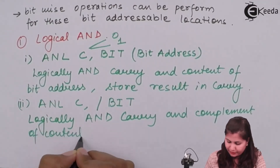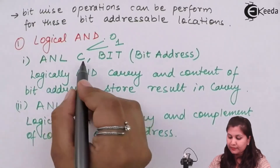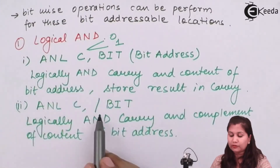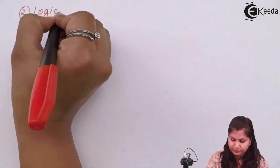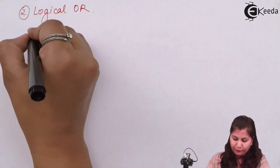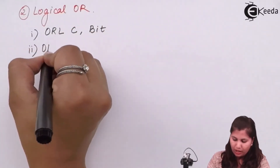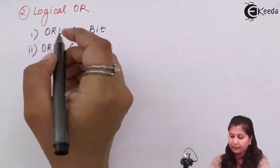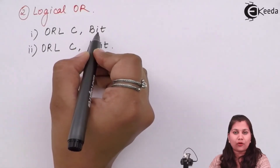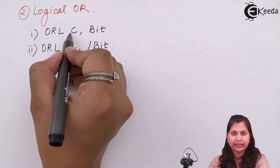The second instruction is logical OR. Here also we have two types: ORL C, bit and ORL C, complement-of-bit. Just like the logical AND, the contents of the carry and the contents of the bit address are logically ORed with each other, and the result is stored in the carry itself.